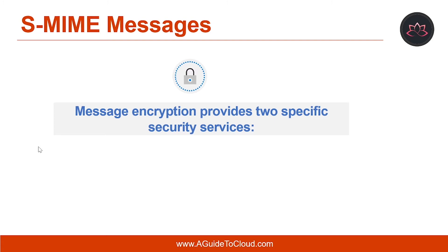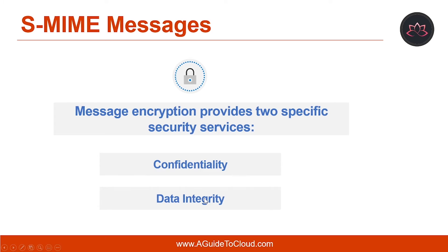There are two serious weaknesses addressed: confidentiality and data integrity. Message encryption serves to protect the content of the email message — only the intended recipient can view the contents, which remain confidential and cannot be known by anyone else who might receive or view the message. Encryption provides confidentiality while the message is in transit and in storage. As with digital signatures, message encryption also provides data integrity services. Please note that the message is encrypted by utilizing the recipient's public key, which is available to everyone. Thus, message encryption does not provide authentication and therefore does not provide non-repudiation.